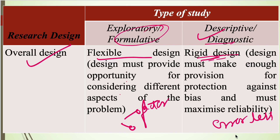To repeat the key points: exploratory research design is a very flexible design with no particular fixed parameters, and it discusses different aspects of the problem. Whereas descriptive research design is a very rigid design — all aspects and parameters are fixed at the start of the research process. It is a less-error design because it makes enough provision for protection against biasness and maximizes reliability.